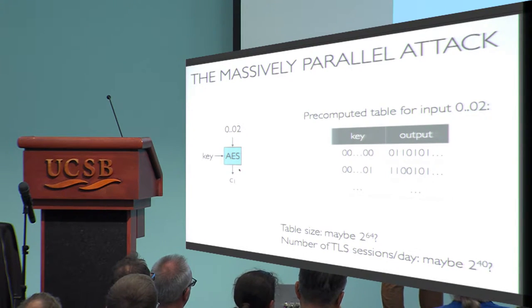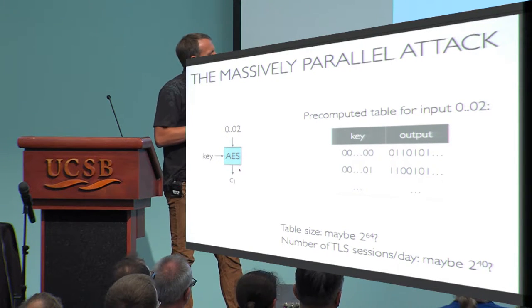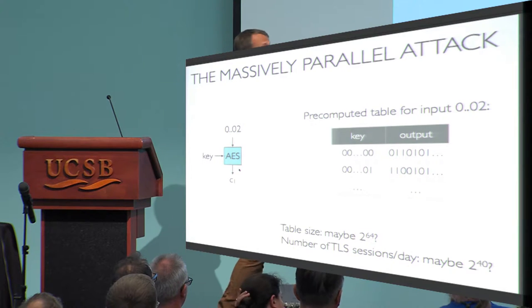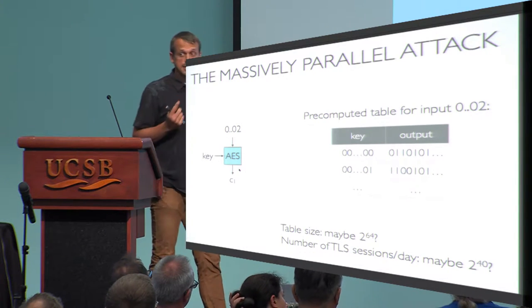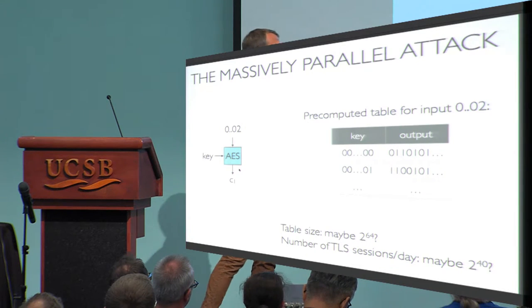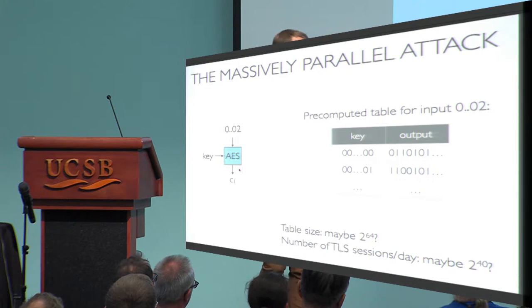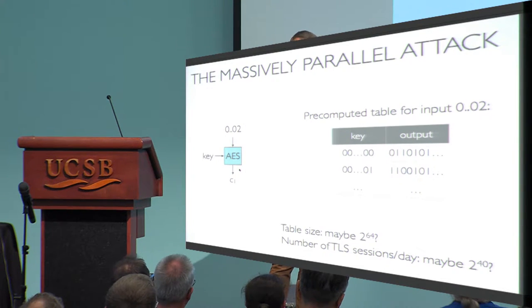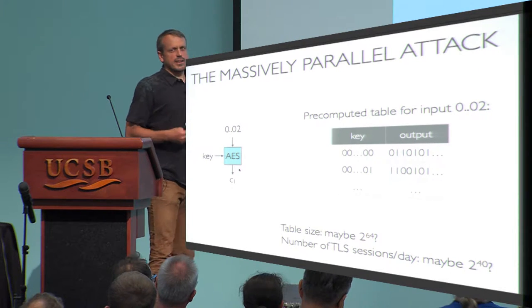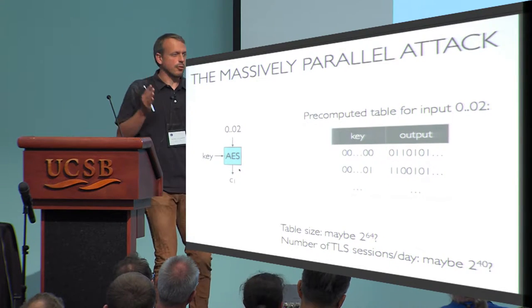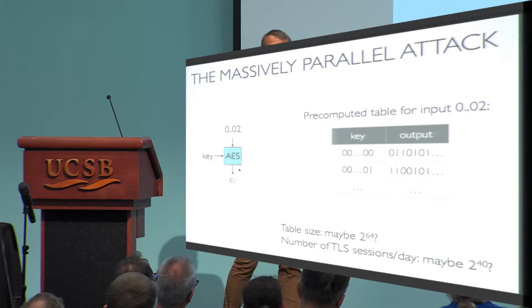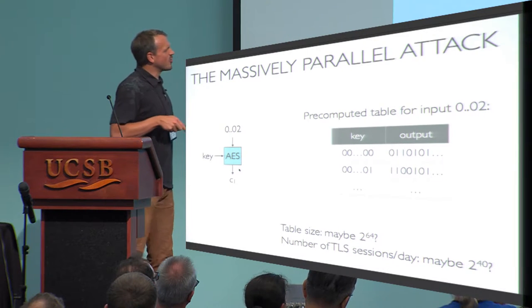Is this attack realistic? Making bold assumptions: maybe the NSA can store 2^64 table rows — probably a bit more than they can actually store, but not too far away. With billions of devices running TLS, each running 100 sessions, we get roughly 2^40 sessions. AES has a 128-bit key, so we still have a security margin of about 2^20 — a one-in-a-million chance. I'm undecided whether this is really a problem, but maybe they know something about AES that lets them optimize the attack.